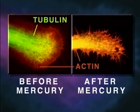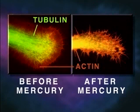Shown here is a neurite growth cone stained specifically for tubulin and actin, before and after mercury exposure. Note that the mercury has caused disintegration of tubulin microtubule structure.